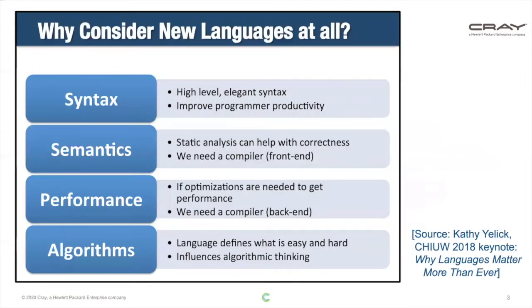A lot of people, when you tell them you're doing a language, say why are you doing that — it's really hard. It has technical challenges, but there are also big social challenges in terms of getting people to use a new language. This is a slide from a keynote talk that Kathy Yellick gave at this workshop called 'Why Languages Matter More Now Than Ever,' arguing that languages have syntactic, semantic, performance-related, and algorithmic-related benefits — all reasons that we think languages are very important for parallel computing.